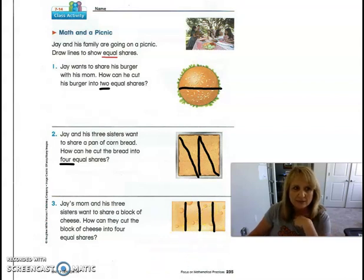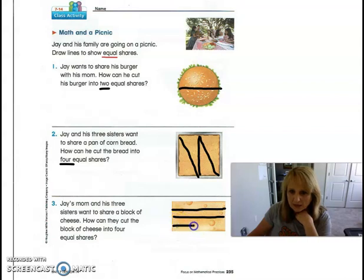Are there any other ways that we could have done it? Oops, we don't want that. I do not know what happened there but we want to get rid of that, don't we? So let's go back. There we go. Okay, how about this one? Cut it across the middle this way and then in half again and in half again. Is that four equal pieces?